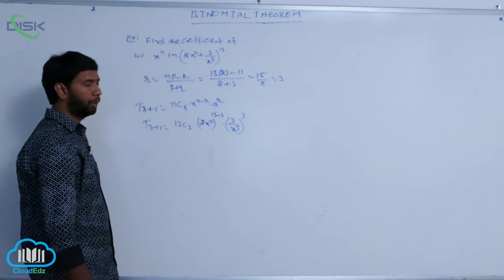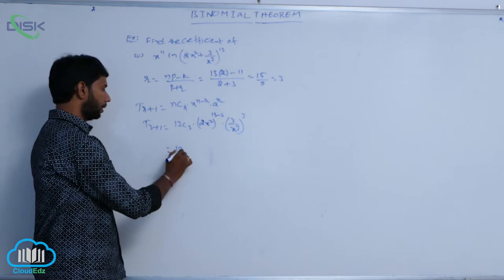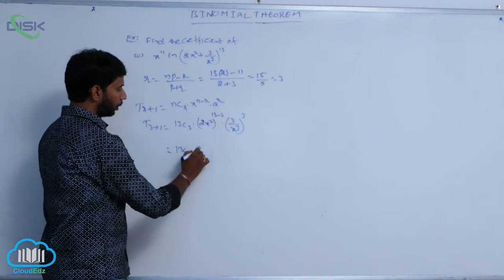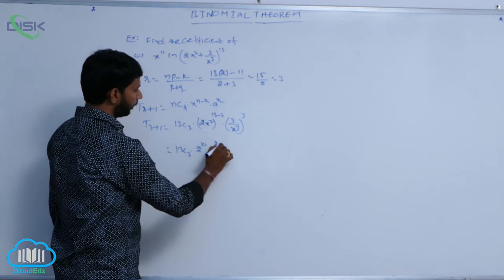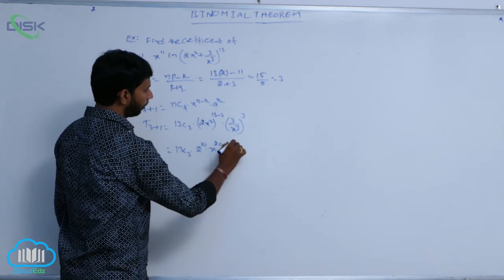3 by x cube whole cube. It is equal to 13 c 3 into 2 power 10 into x power 20 into 3 power 3 cube by x power 9.